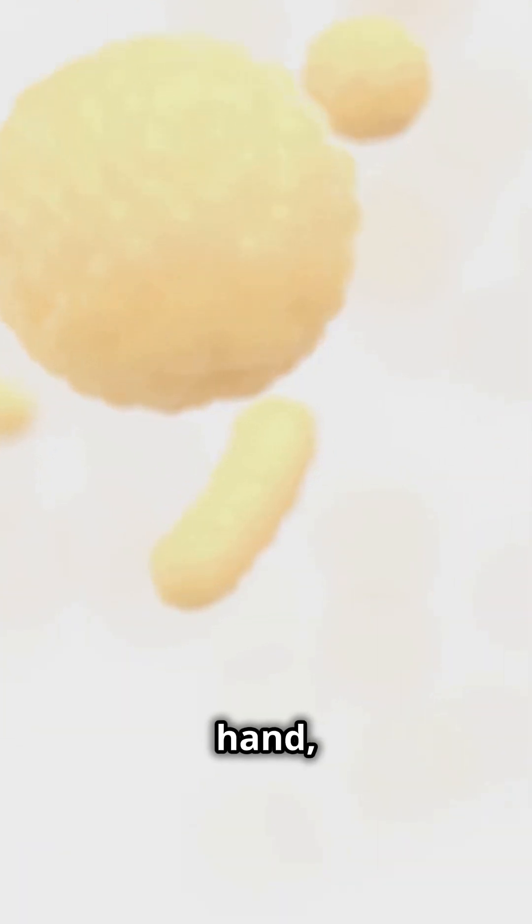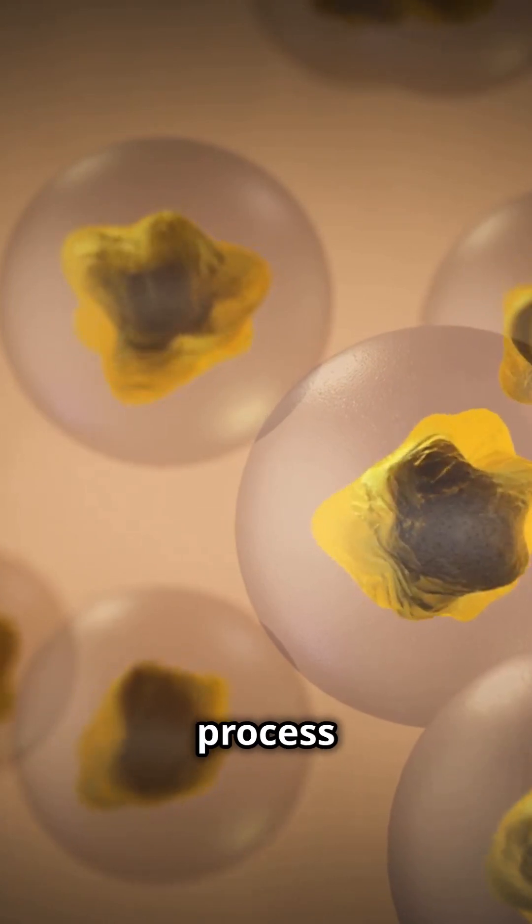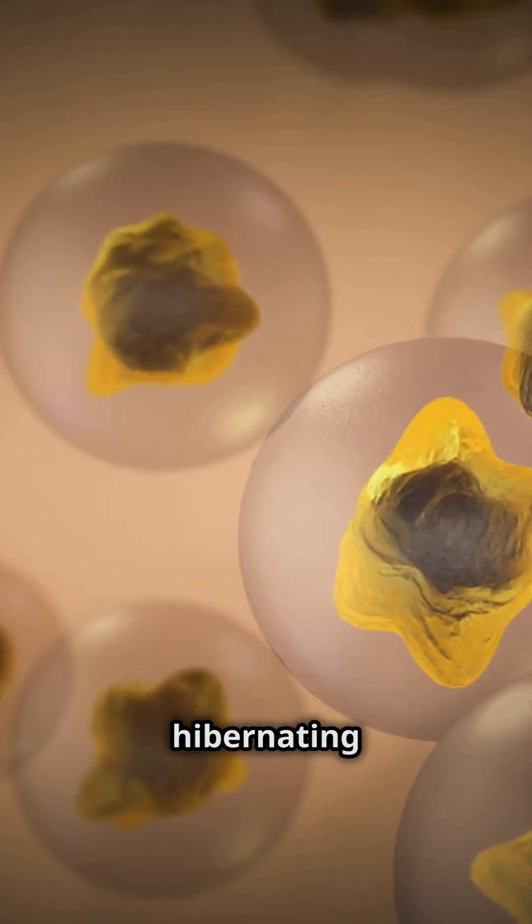Brown adipocytes, on the other hand, are like the athlete cells of the fat world. They generate heat by burning fat, a process particularly important for newborns and hibernating animals.